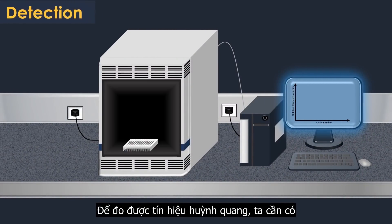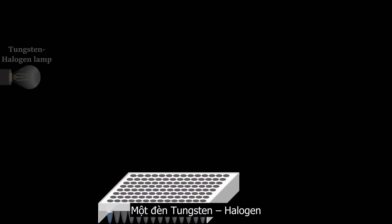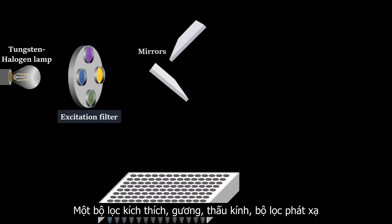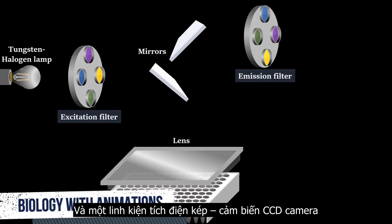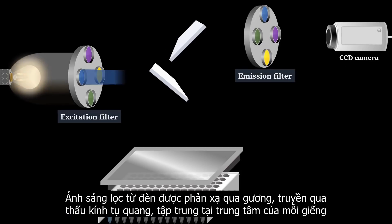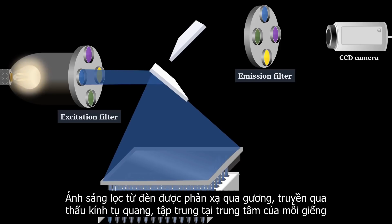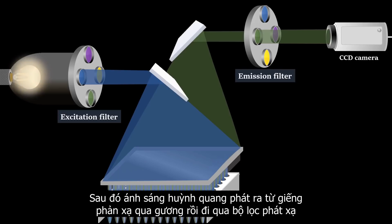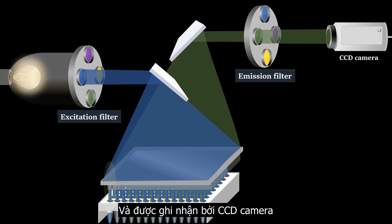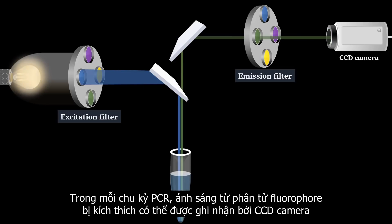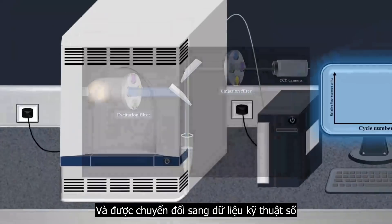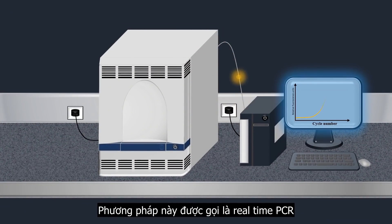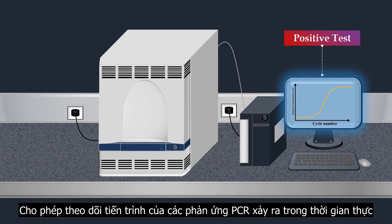For the measurement of the fluorescent signal, a tungsten halogen lamp, an excitation filter, mirrors, a lens, an emission filter, and a charge-coupled device (CCD) camera are used. Filtered light from the lamp is reflected off a mirror, passes through a condensing lens, and is focused into the center of each well. Then fluorescent light emitted from the wells reflects off the mirror, passes through an emission filter, and is detected by the CCD camera. In each PCR cycle, light from excited fluorophores can be detected by the CCD camera, which converts the light it captures into digital data. This method is known as real-time PCR, which allows monitoring of the progress of the PCR reaction as it occurs in real-time.